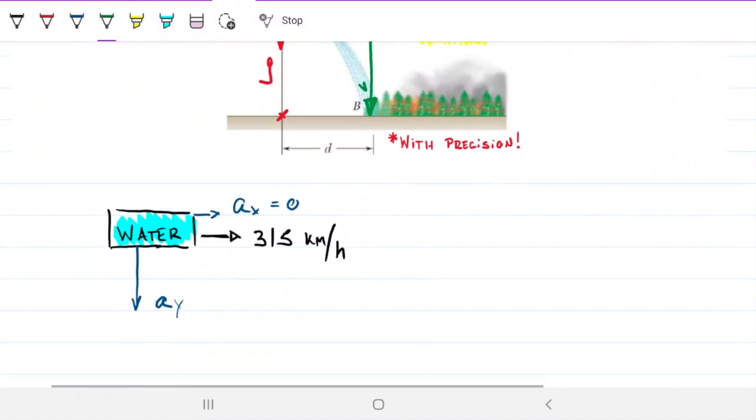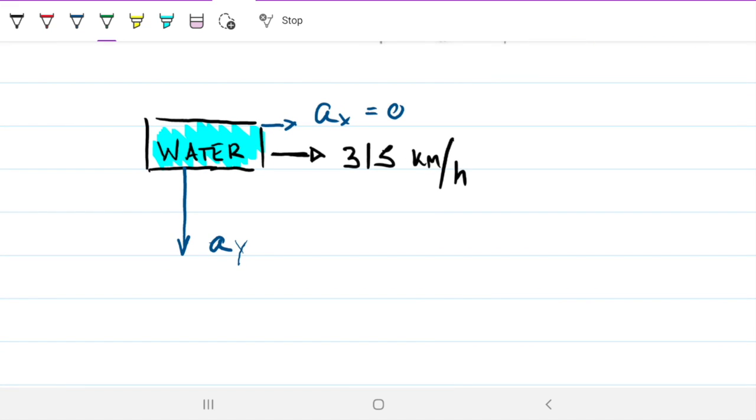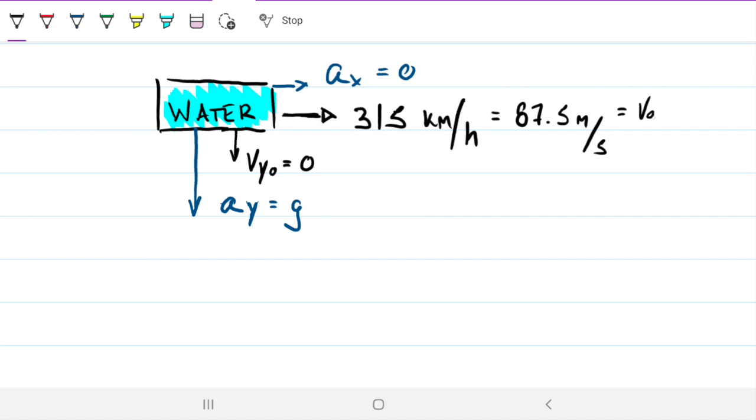Let's forget the plane and just think about the water. The water is traveling horizontally at 315 kilometers per hour, which is 87.5 meters per second. In the x direction there's no acceleration, but in the y direction we have gravity. Velocity-wise, there's no velocity in the y direction initially, so vy0 is zero because it's traveling in a straight line. This would be our vx0.